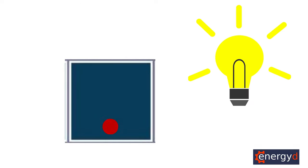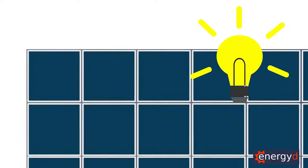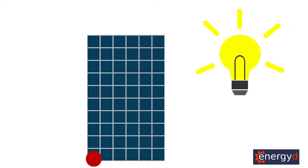To increase power output, solar panel manufacturers daisy-chain a whole load of these cells together, usually about 60.